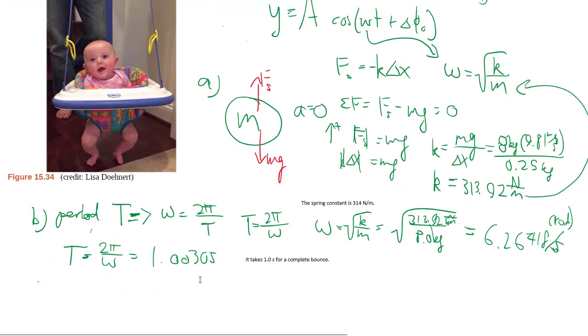Part C, they're asking about the maximum velocity given a certain amplitude. For these kind of motions, because it's governed by that sinusoidal function, if you want the velocity, we take the derivative of my position.